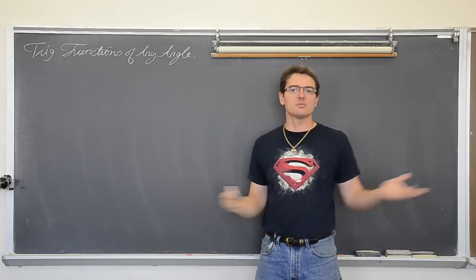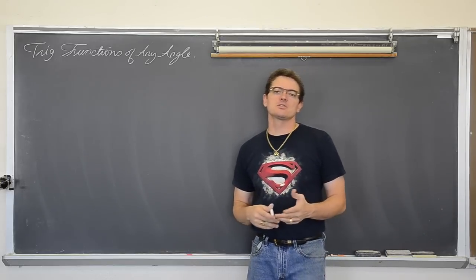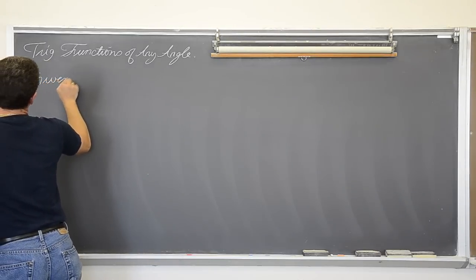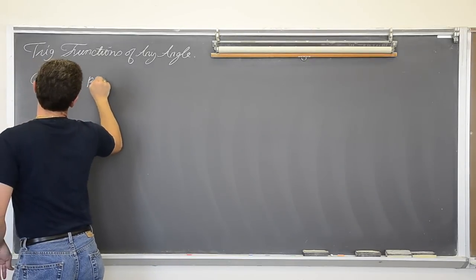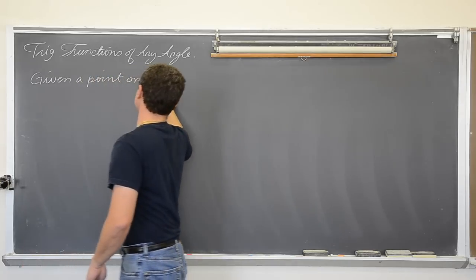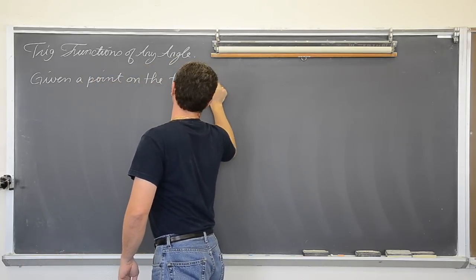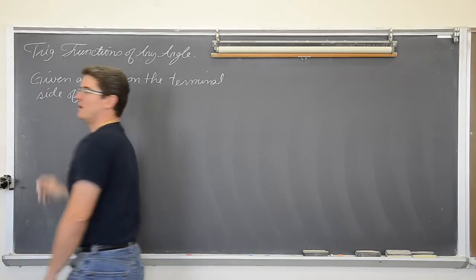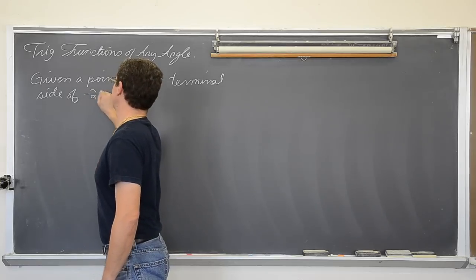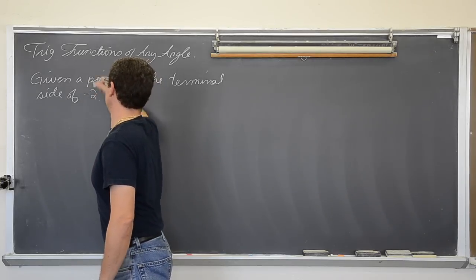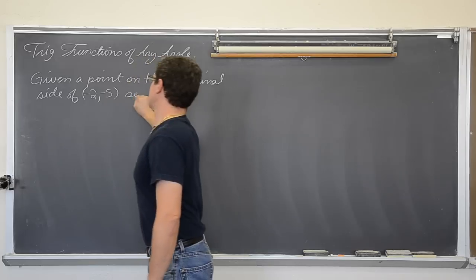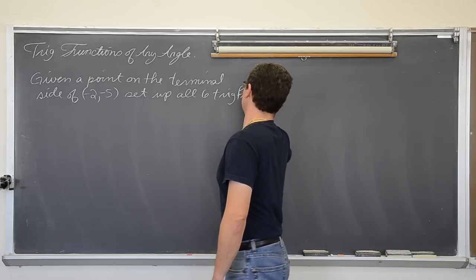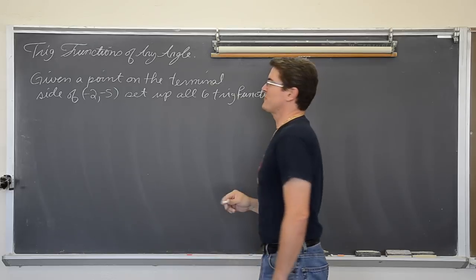Unit circle — we have 16 angles, we know all those angles. What about setting up trig functions for angles that we don't know? Such as this question: given a point on the terminal side of negative two, negative five — set up all six trig functions.